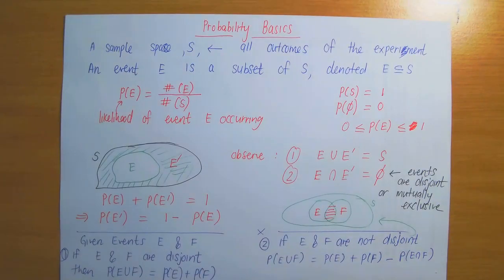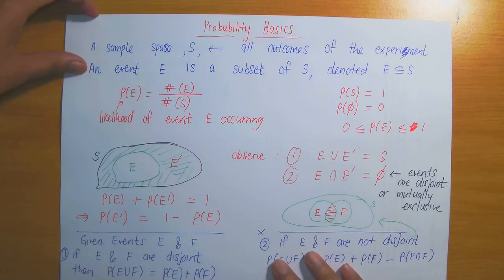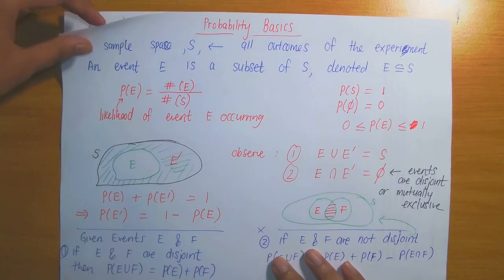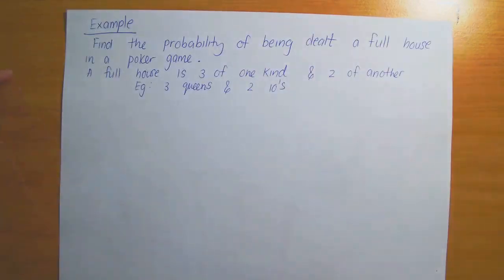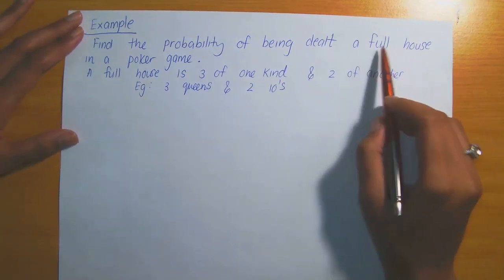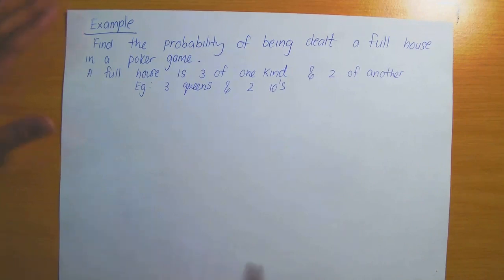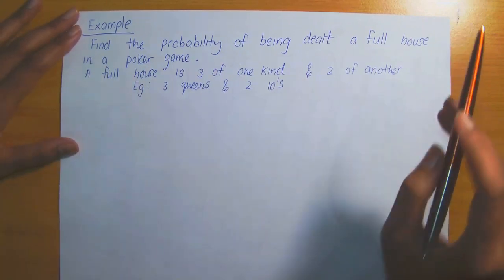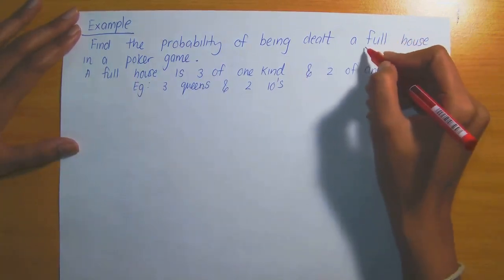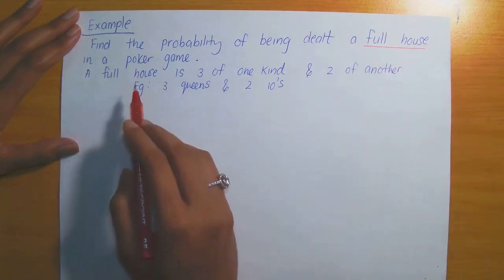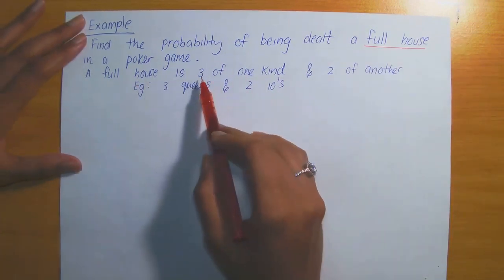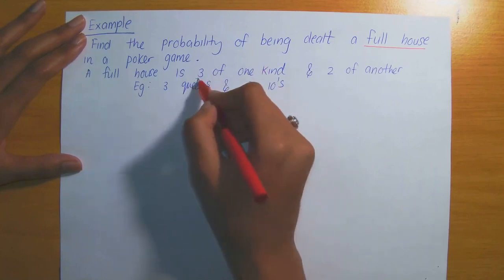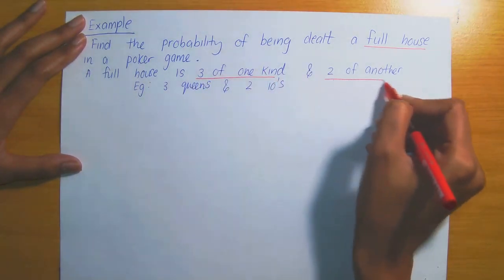This is the basic summary for probability — two important formulae to keep in mind for different questions. Now let's go through the following question: find the probability of being dealt a full house in a poker game. A full house is a set of cards that includes 3 of one kind and 2 of another kind.